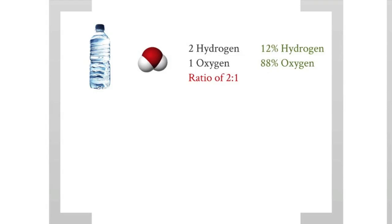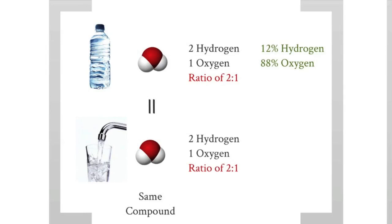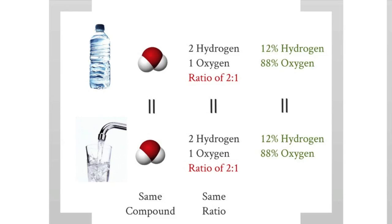Looking at the mass percents, we find that water has 12% hydrogen by mass and 88% oxygen. What if we went somewhere else and got water from the tap? If we grabbed one of those water molecules, we would see that it is the same compound — the same ratio of two hydrogen to one oxygen, a ratio of 2 to 1 — with the same mass percents: 12% hydrogen and 88% oxygen. The water from the faucet has the same mass percent as the water from the bottle.